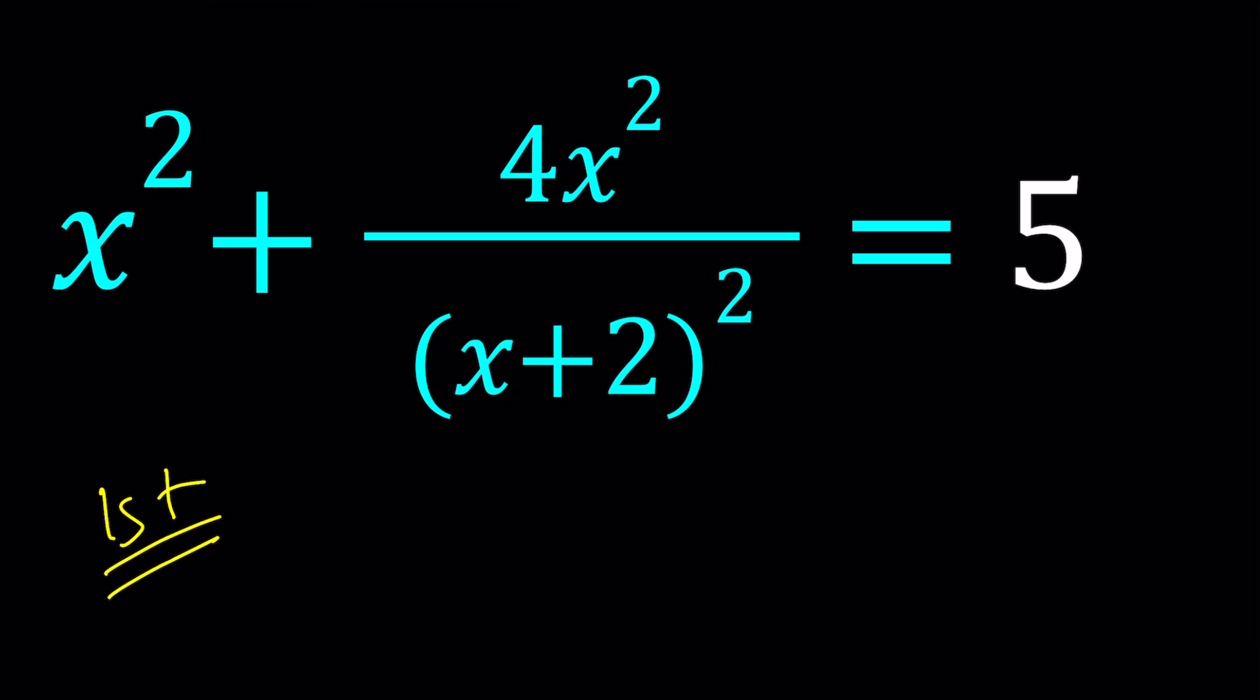For my first method I'm going to use brute force and just expand everything. If you go ahead and make a common denominator first, you can write this as x²(x+2)² + 4x² = 5(x+2)² after cross multiplying.